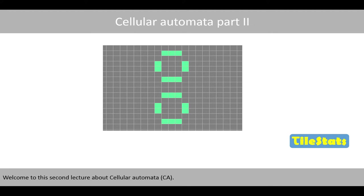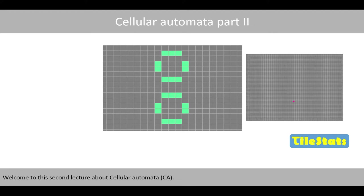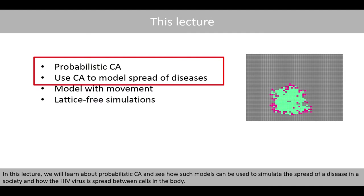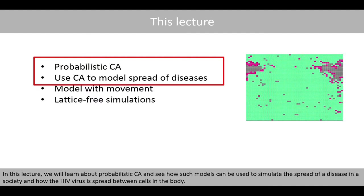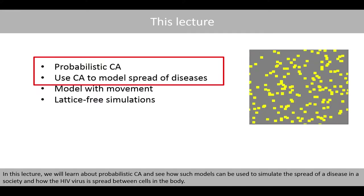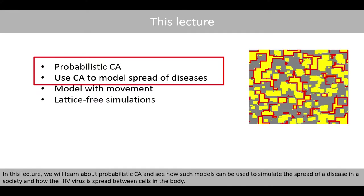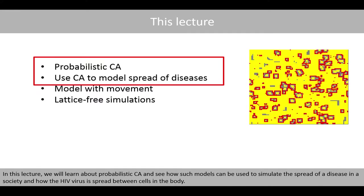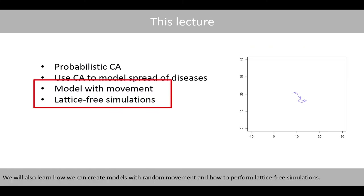Welcome to this second lecture about cellular automata. In this lecture we'll learn about probabilistic cellular automata and see how such models can be used to simulate the spread of a disease in a society and how the HIV virus is spread between cells in the body. We'll also learn how to create models with random movements and how to perform lattice-free simulations.